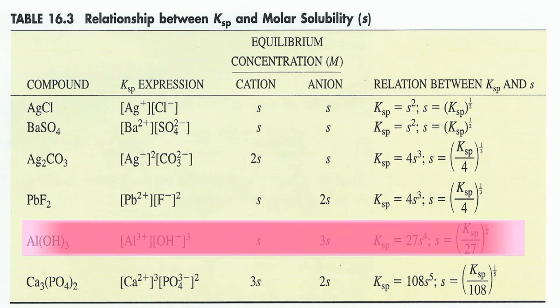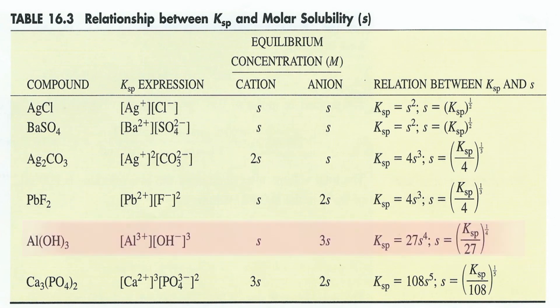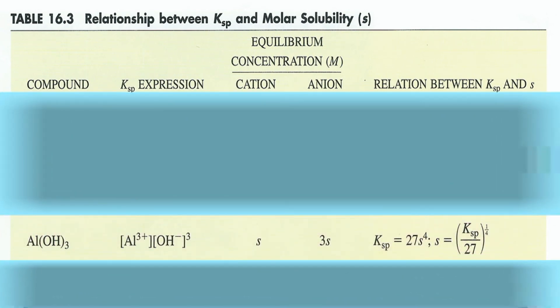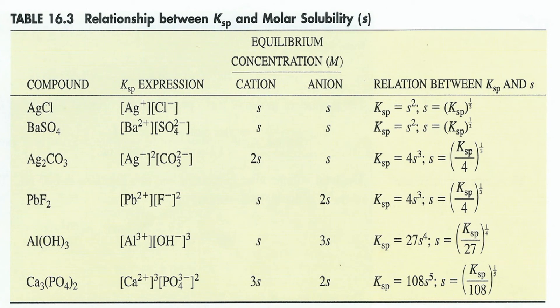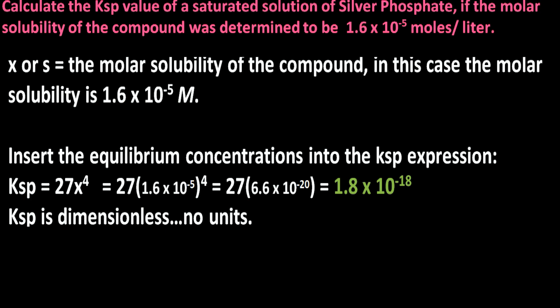Using a table that relates the KSP to the molar solubility of a compound, we may use a general formula to determine KSP. Notice that in this case, the number of ions produced resembles the same number produced by the dissolution of aluminum hydroxide. Therefore, we may use the KSP expression for aluminum hydroxide to determine the KSP of silver phosphate. The KSP equals 27S to the fourth, where S is used instead of X. Inserting the molar solubility: 1.6 times 10 to the minus 5 to the fourth times 27 equals 27 times 6.6 times 10 to the minus 20, which equals 1.8 times 10 to the minus 18. This represents the KSP value for silver phosphate.